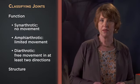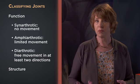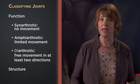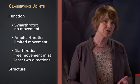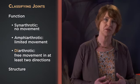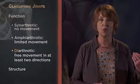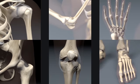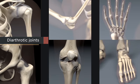Articulations with free movement — the diarthrotic joints of the body — will be covered throughout this course. 'Di' is a prefix meaning two, because diarthrotic joints are freely movable in at least two directions. This functional classification includes all the stereotypical joints people think of, like the shoulder, hip, elbow, knee, and joints within the fingers or toes. These are the most complex joints in the body and therefore the most prone to injury and painful dysfunction. Diarthrotic joints are a primary focus of orthopedic medicine, physical and occupational therapy, fitness coaching, and athletic training.